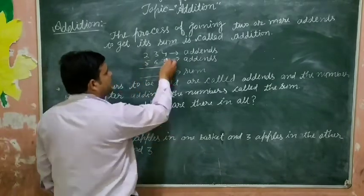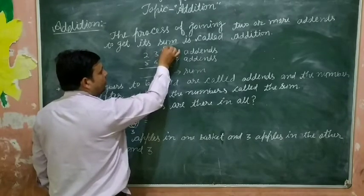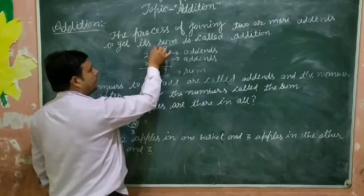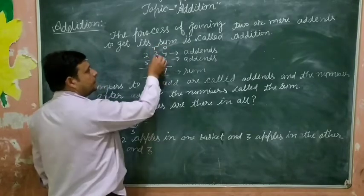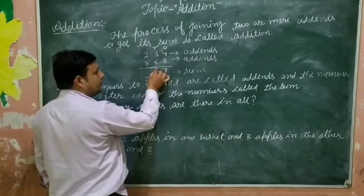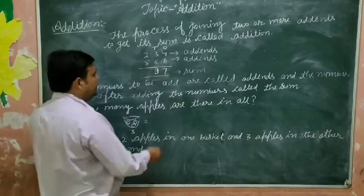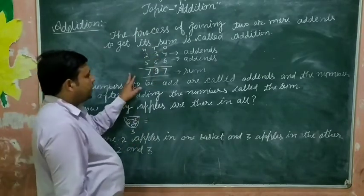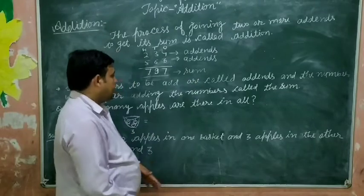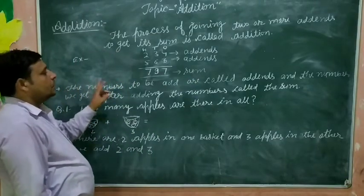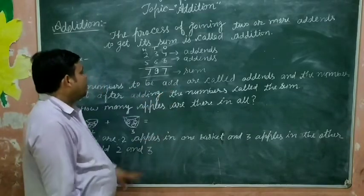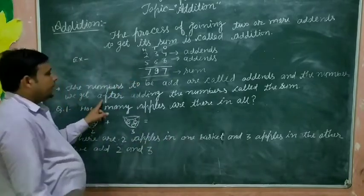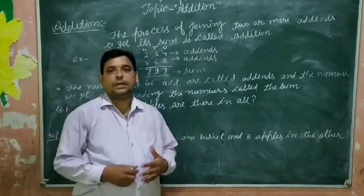Now we add the ones digit: 4 plus 3 is 7. Tens digit: 3 plus 6 is 9. Hundreds digit: 2 plus 5 is 7. The result we get after adding is called the sum. The numbers to be added are called addends, and the number we get after adding is the sum.